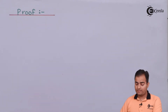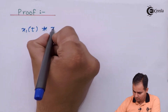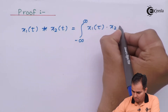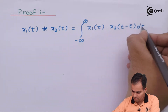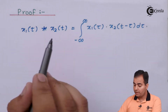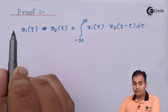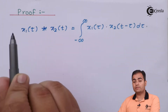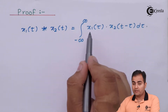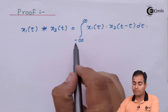What is the definition of convolution? x1(t) convolved with x2(t) means we convert both functions' variable t into τ. The first function is represented in terms of τ, the second one is delayed by t after converting into τ, and then the whole product is integrated with respect to τ over the range of minus infinity to infinity.